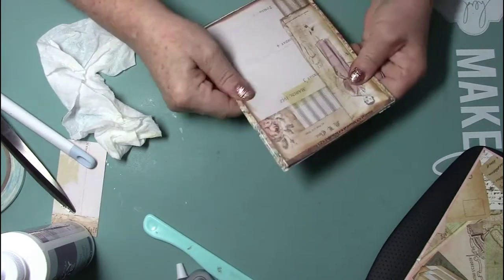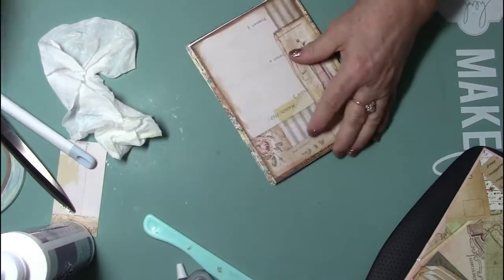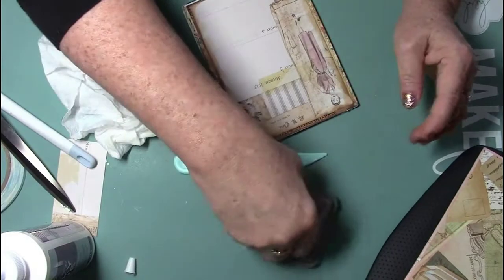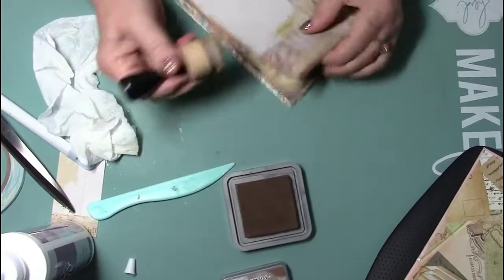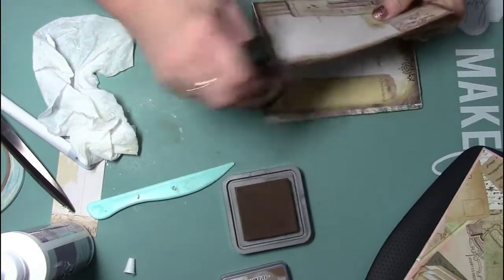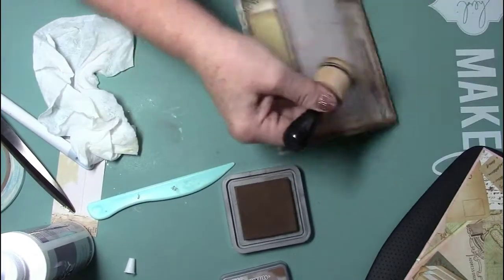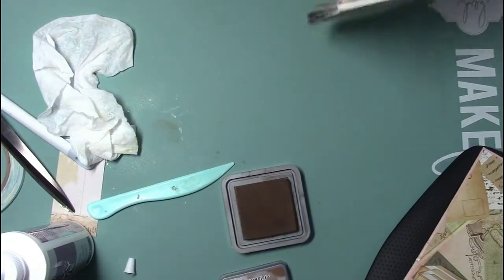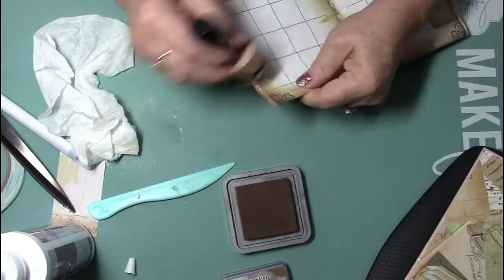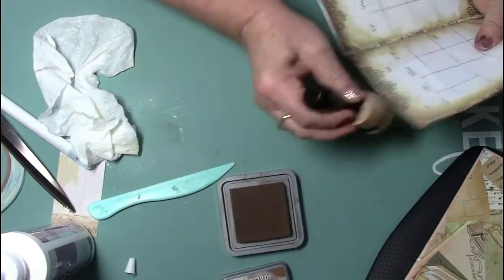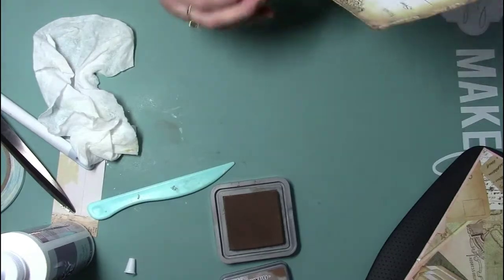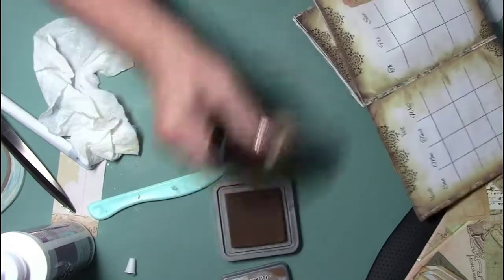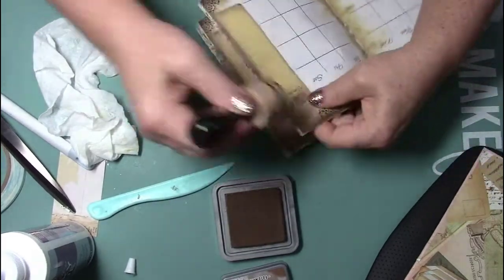Okay, so now I'm gonna turn this over. And I'm gonna just distress a lot of the edges of this. I think that would be prettier, and especially any white pieces that were left. Yeah, this is pretty.